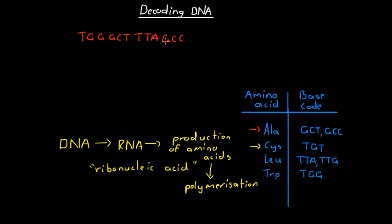We have thymine, guanine, guanine, and so on. To see what amino acids this is telling our body to produce, we break it down into triplets. The first triplet is TGG — thymine, guanine, guanine — which indicates that tryptophan is to be produced. Tryptophan is denoted in shorthand as TRP, so our first amino acid is tryptophan.